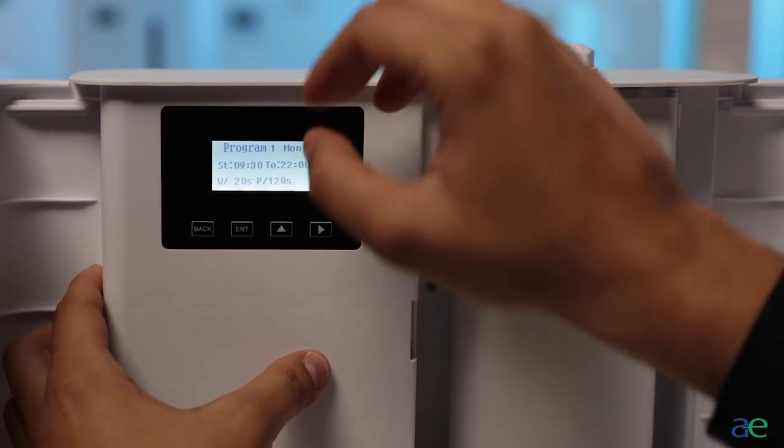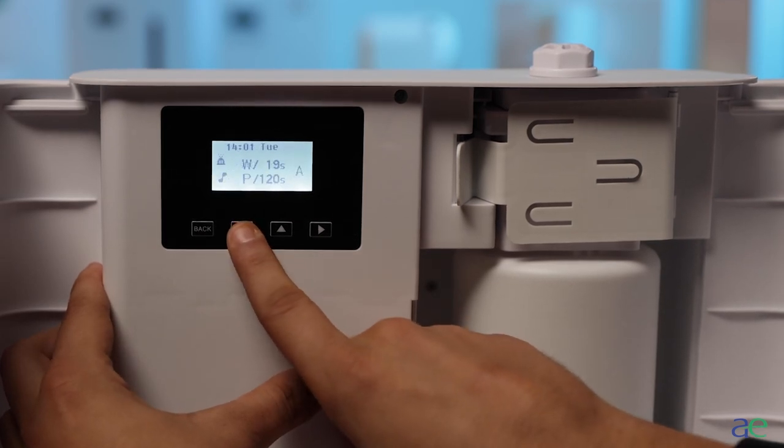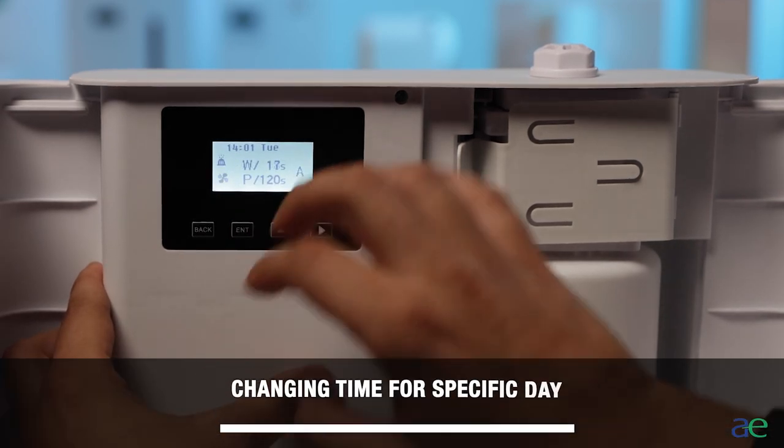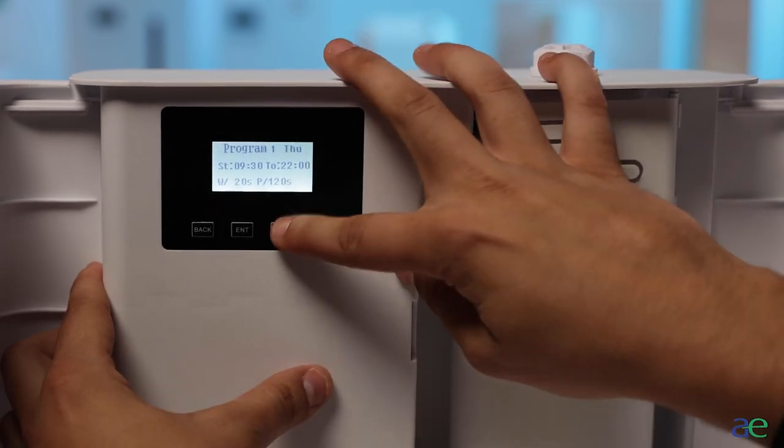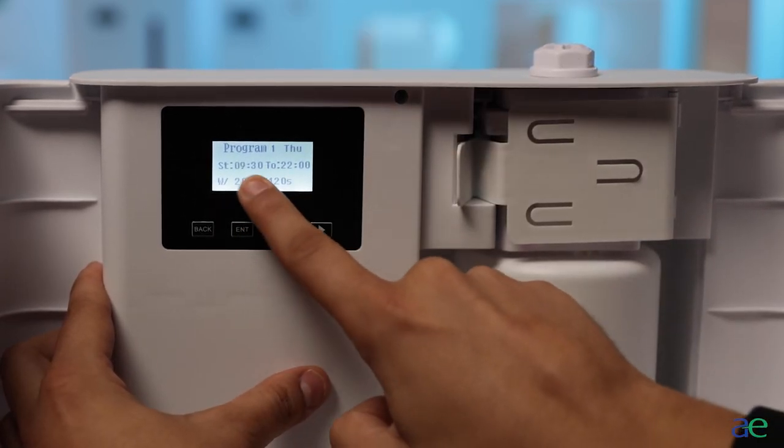Once you have reached the desired pause time, press enter to save your settings. If you want to change the time for one specific day, you would simply select the day, place the desired program, and press enter to save your settings.